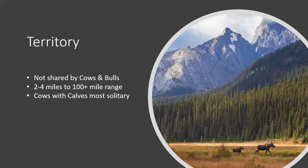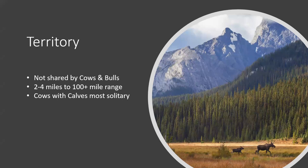Regarding territory — because they're so solitary, you won't see them together very often. Territories are not shared between cows and bulls. An average territory for either one is two to four miles but can get up to a hundred-plus miles depending on the number of moose in the area. Cows with calves are very solitary, largely to avoid predation on those calves. Cows will allow their calves in their individual zones until the calf becomes a yearling, and then she'll actually drive them away. Orphaned calves are better tolerated by bulls than cows in most cases.